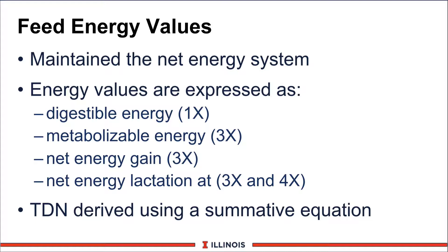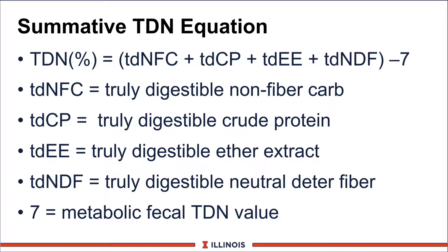These energies are derived using a TDN from a summative equation, primarily applied from Ohio State University. Included in the calculations are TDNFC — truly digestible non-fiber carbohydrate — plus truly digestible crude protein, truly digestible ether extract, truly digestible neutral detergent fiber, and then subtracting off the metabolic fecal TDN value. So this calculates the energy based on these nutrients, which is a major change from the previous NRC — we can actually test the feed and now estimate energy values.